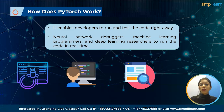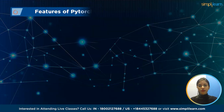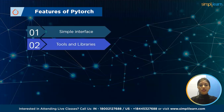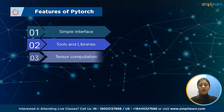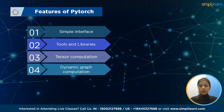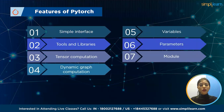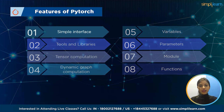Now that we know what PyTorch is and how it works, let's understand the features of PyTorch. The key features include simple interface, tools and libraries, tensor computation, dynamic graph computation, variables, parameters, modules, and functions. Let's understand each in detail.